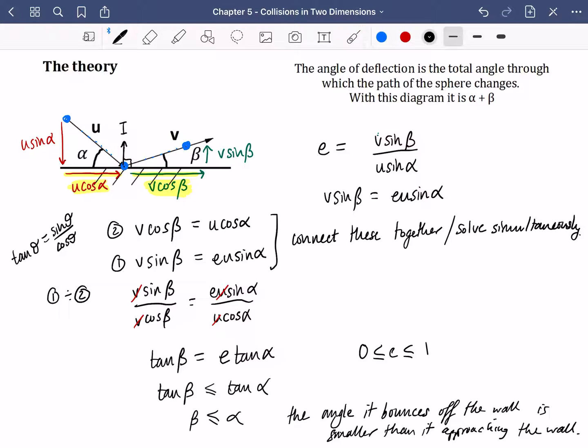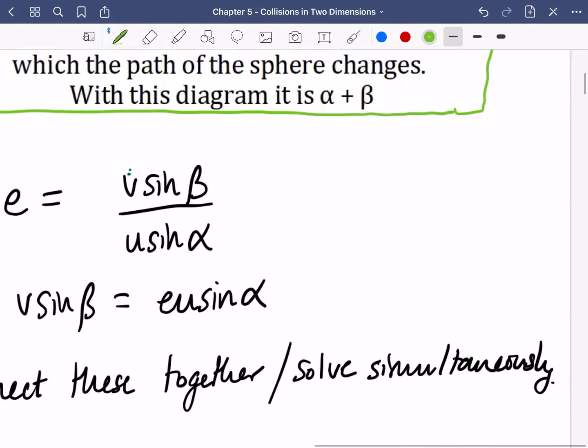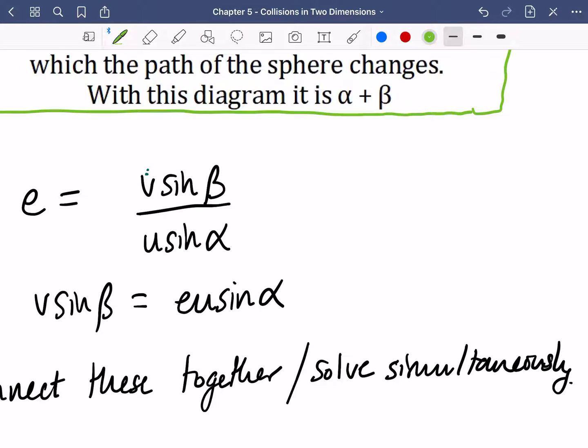There's one last bit that I need to speak about that we haven't even mentioned, which is this. That the angle of deflection is the total angle through which the path of the sphere changes. With this diagram, it is alpha plus beta. And I'm just going to try and explain that over here in a bit more detail. So the ball is up here. And it's traveling in this direction. And then it bounces up and it travels over here. So this is the journey that it's making. This is alpha. And this is beta.